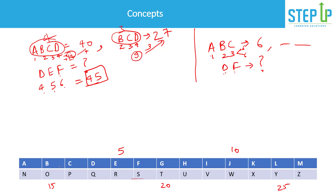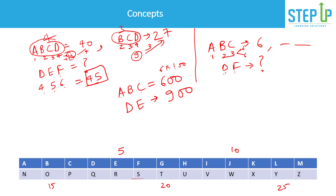Ultimately, they look at place value. They could move one up or one minus, or multiply by the number of places. For example, A B C = 600 and D E = 900 — they might be adding place values and multiplying by 100. So for T U: T is 20, U is 21, sum is 41, giving 4100.